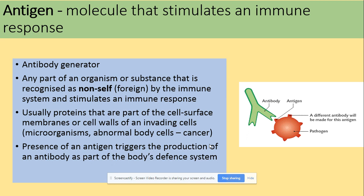An antigen is a foreign protein found on the surface of a pathogen that stimulates an immune response. Specifically, it stimulates the production of an antibody. It is a non-self, foreign part of a pathogen. The antibody and antigen are complementary — the antigen is found on the surface of the pathogen, and it triggers the production of a complementary antibody, forming an antigen-antibody complex.